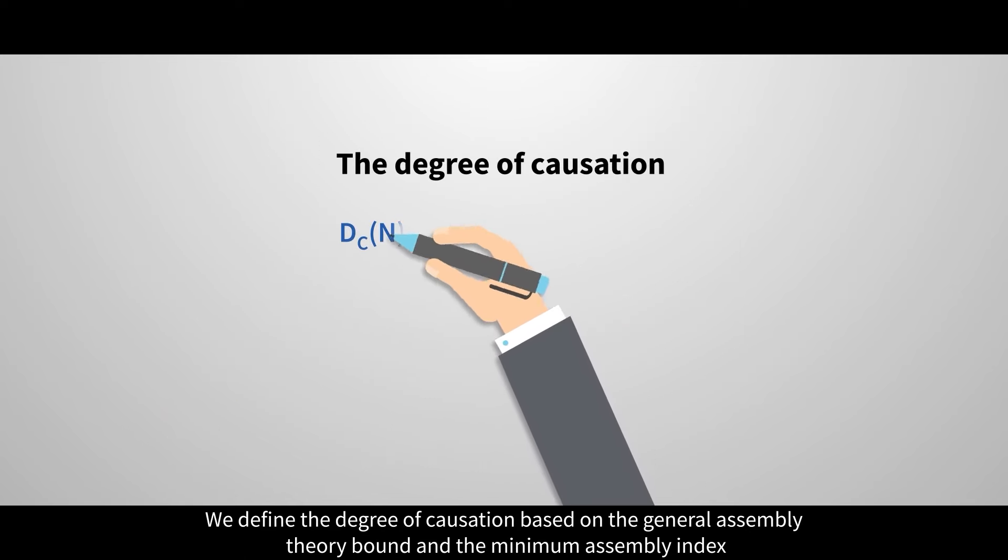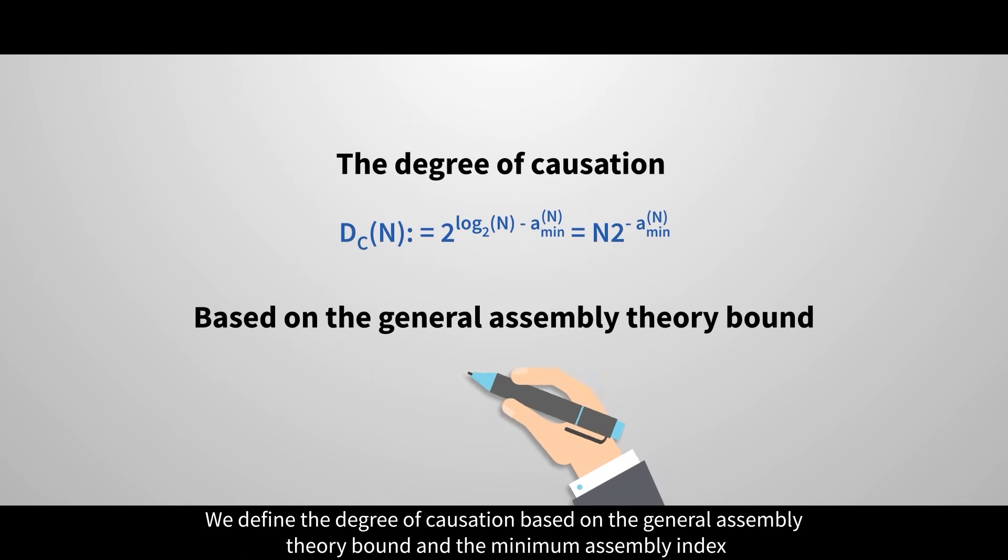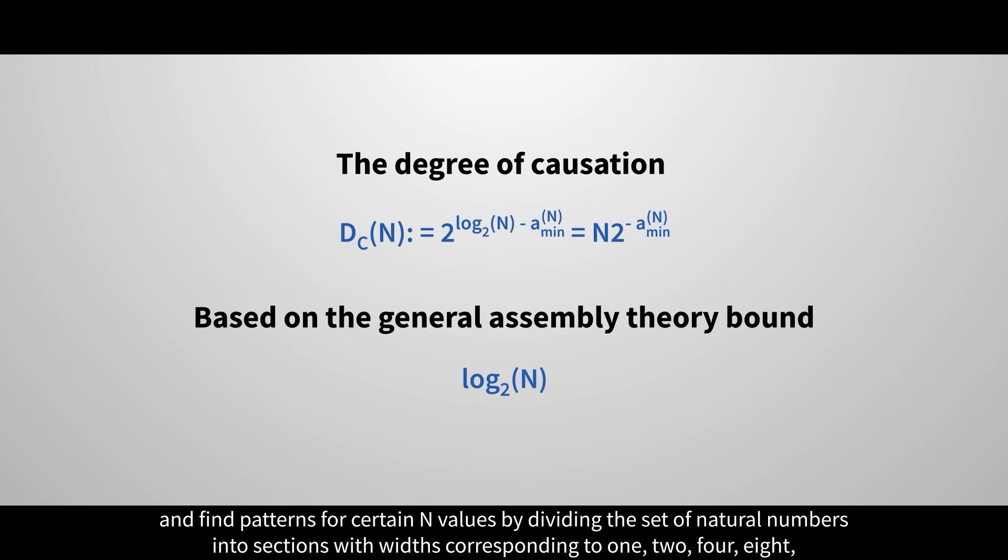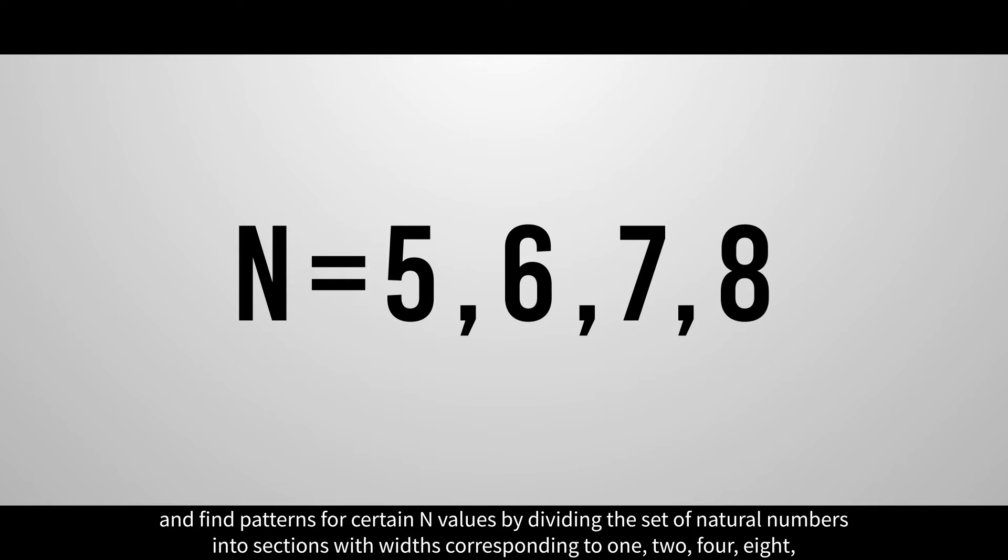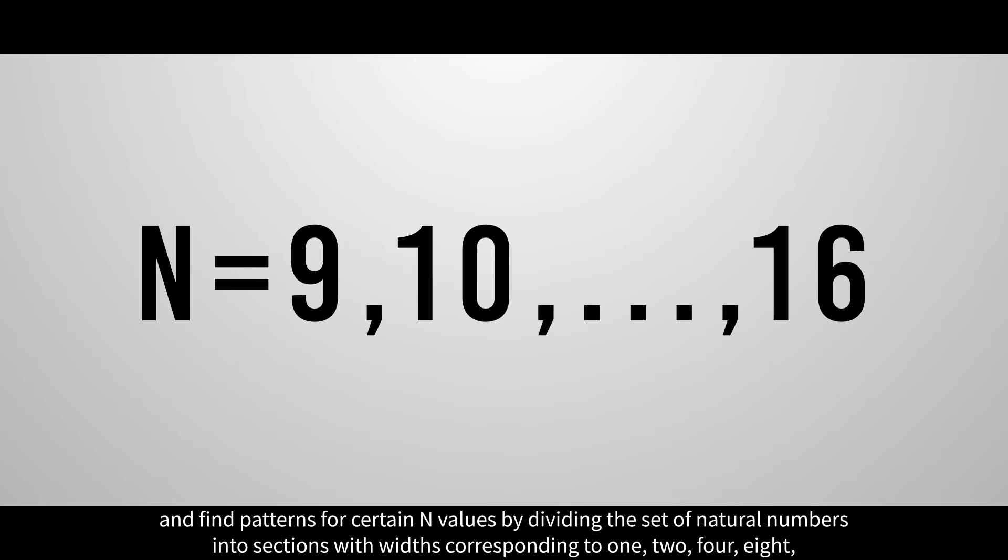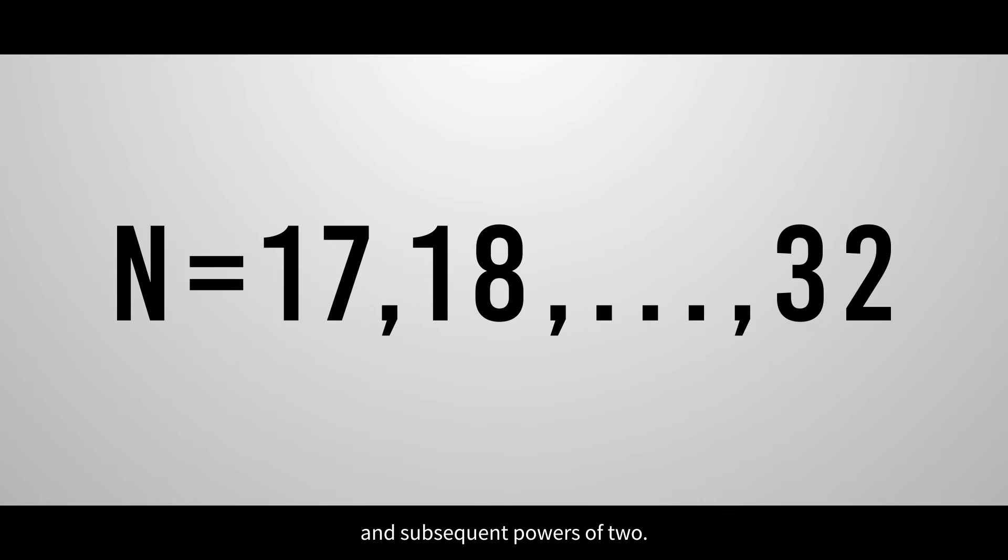We define the degree of causation based on the general assembly theory bound and the minimum assembly index and find patterns for certain n values by dividing the set of natural numbers into sections with the widths corresponding to 1, 2, 4, 8 and subsequent powers of 2.